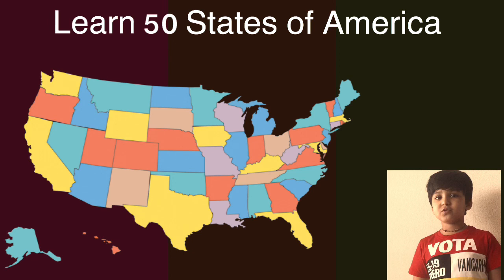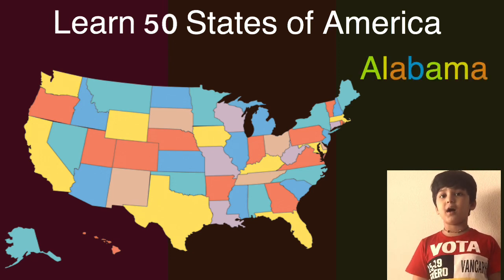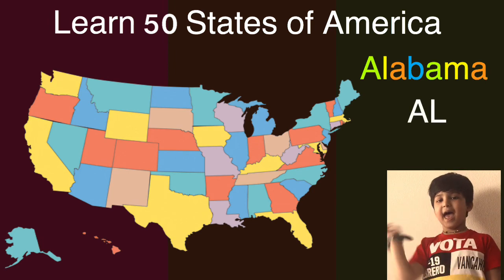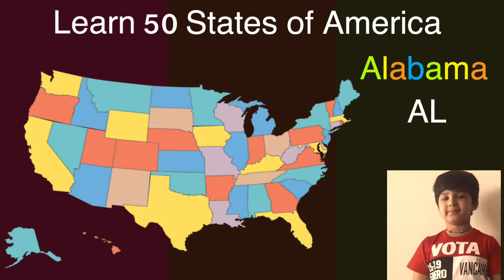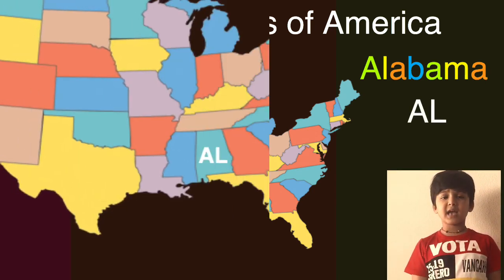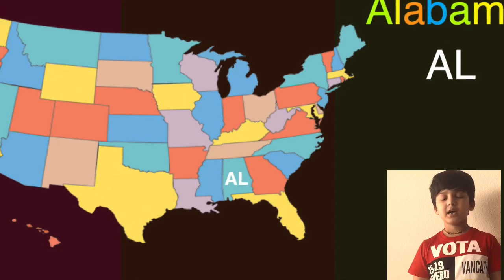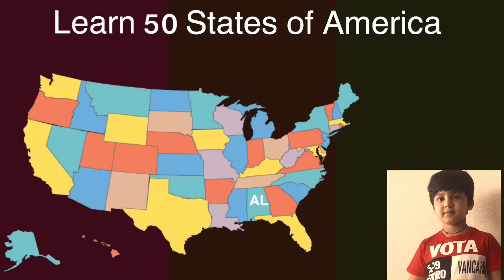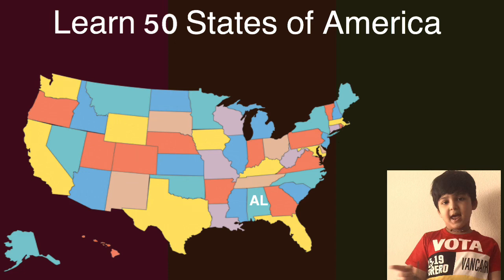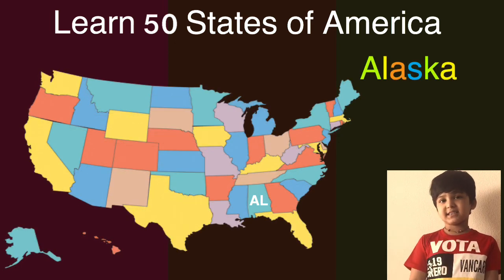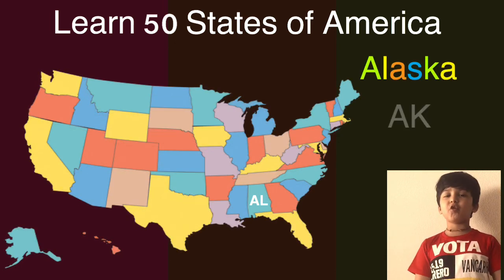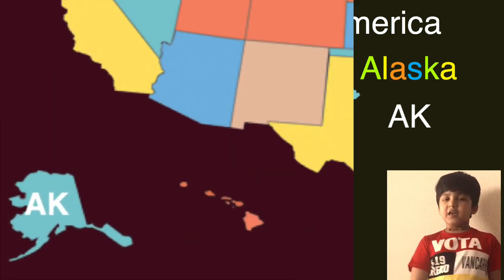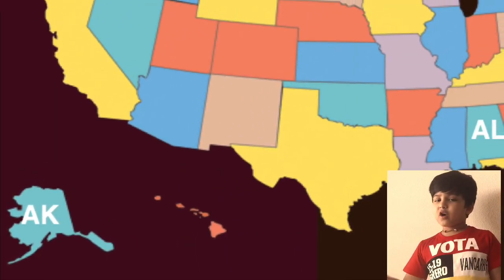The first one is Alabama and the short one is AL. Here comes Alabama on the map. Can you guess who will come next? The next one is Alaska and the short one is AK. Here comes Alaska on the map.